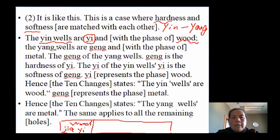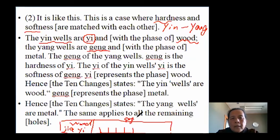Yang jing-well corresponds to geng. In the sequence jia, yi, bing, ding, wu, ji — geng comes here. Geng-xin: geng is the yang metal. So geng represents the yang jing-well points.